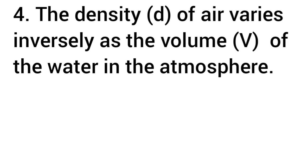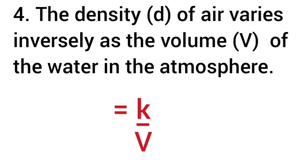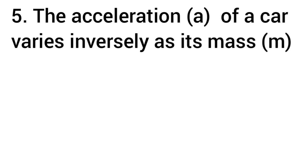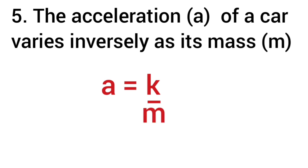For the next number, the density D of air varies inversely as the volume V of water in the atmosphere. So we write D equals k over V, where k is the constant of variation and V is the volume of water in the atmosphere. For the last number, the acceleration a of a car varies inversely as its mass m. So we write a equals k over m, where k is the constant of variation and m is the mass.